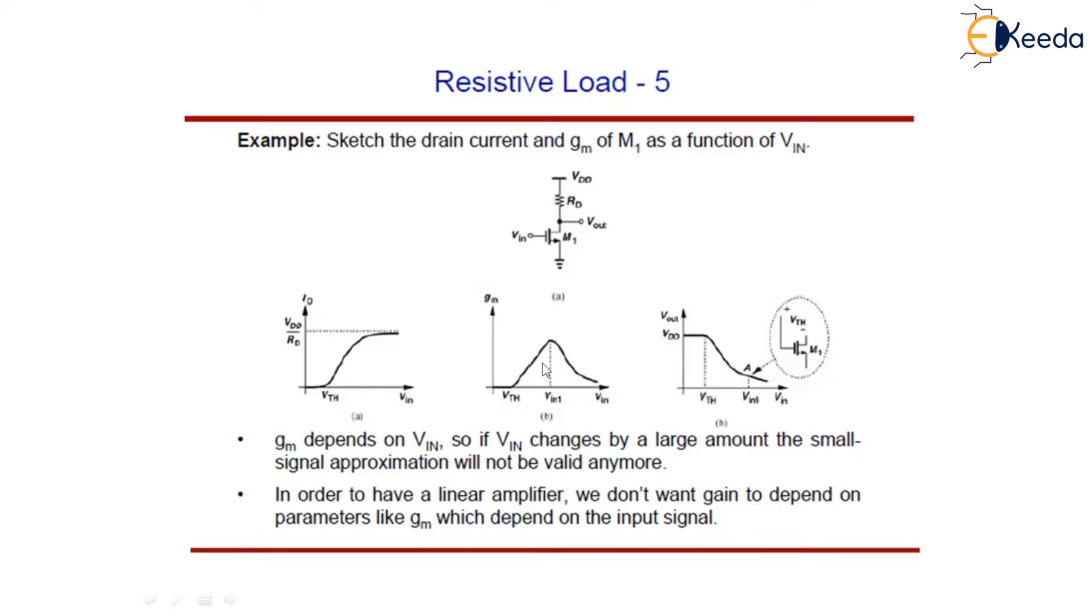So simply, id becomes significant when VIN is greater than VTH, and gm becomes significant also when VIN is greater than VTH. It starts falling after VIN exceeds VIN1.